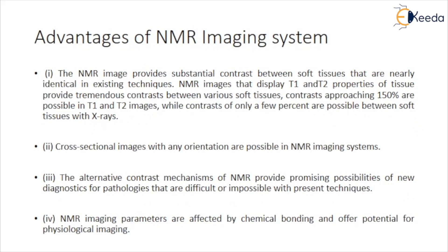Advantages of NMR imaging: NMR images provide substantial contrast between soft tissues that are nearly identical in X-ray imaging. NMR images displaying T1 and T2 properties of tissue provide tremendous contrast between various soft tissues. Contrast approaching 150% is possible in T1 and T2 images, while contrast of only a few percent is possible between soft tissues with X-rays. Cross-sectional images with any orientation are possible, and the alternative contrast mechanisms of NMR provide promising possibilities for new diagnostics of pathologies that are difficult or impossible with present techniques.